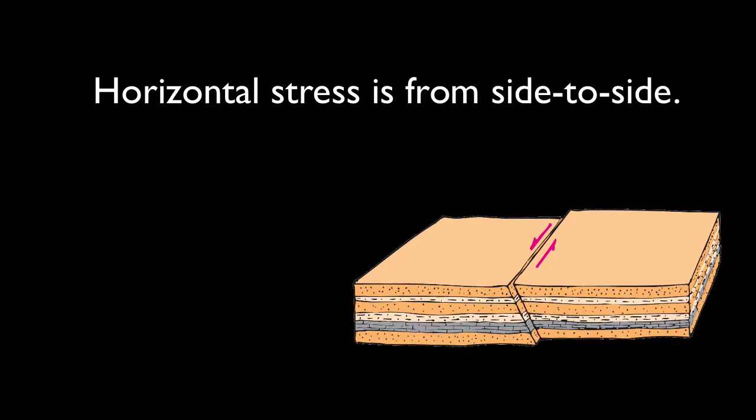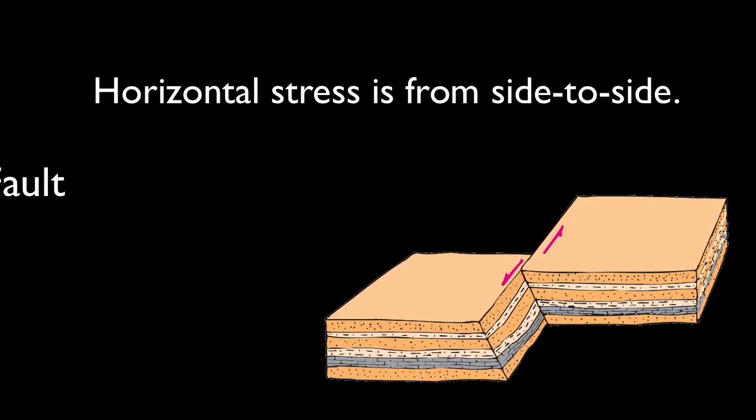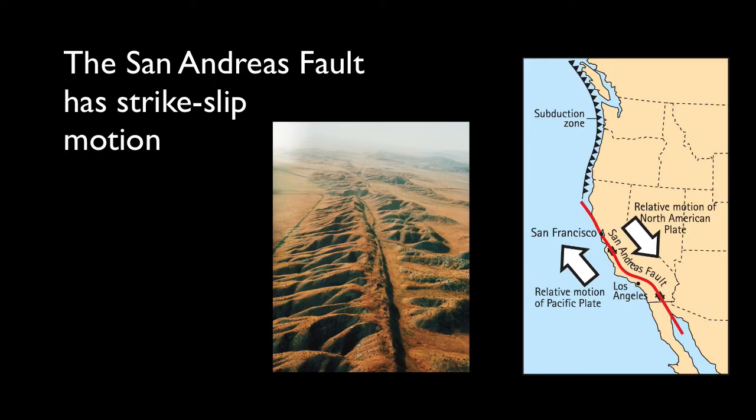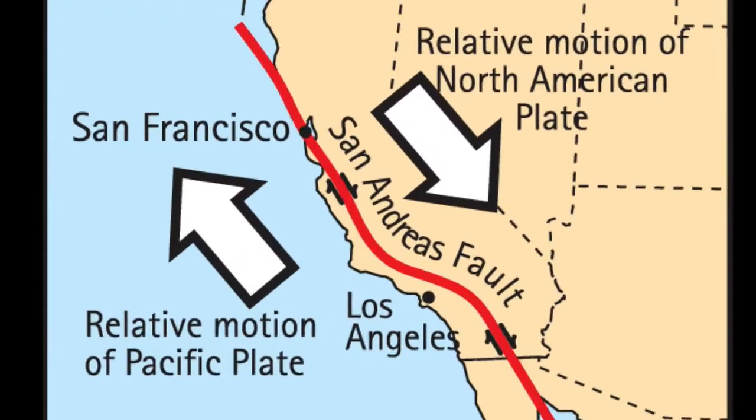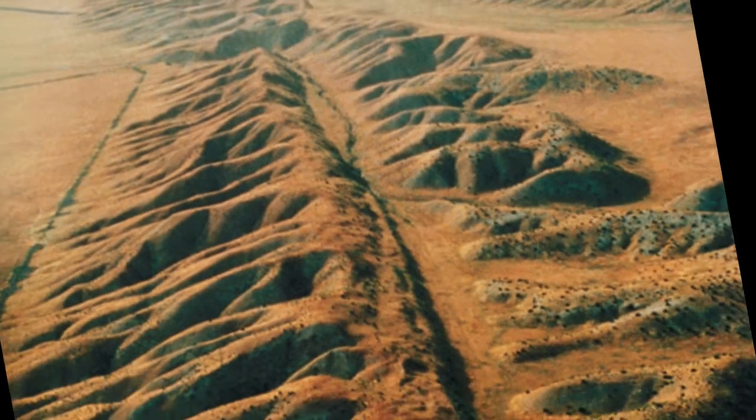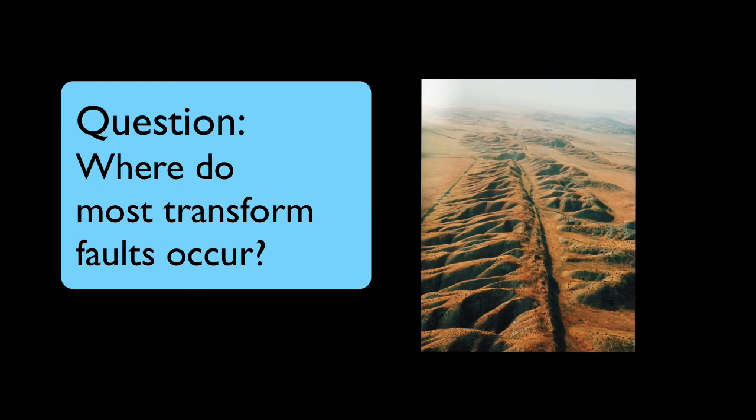If the force is neither compression nor tension, but horizontally, side to side, a strike-slip fault forms. Probably the most well-known strike-slip fault is the San Andreas fault in California. We know that the San Andreas fault is the most well-known transform fault. But where do most transform faults occur?